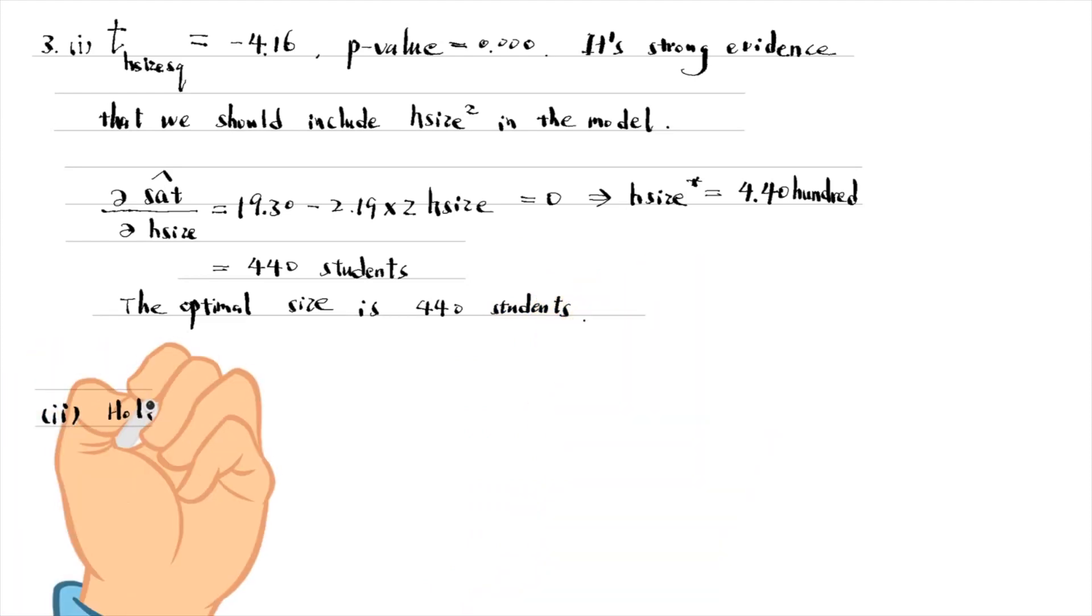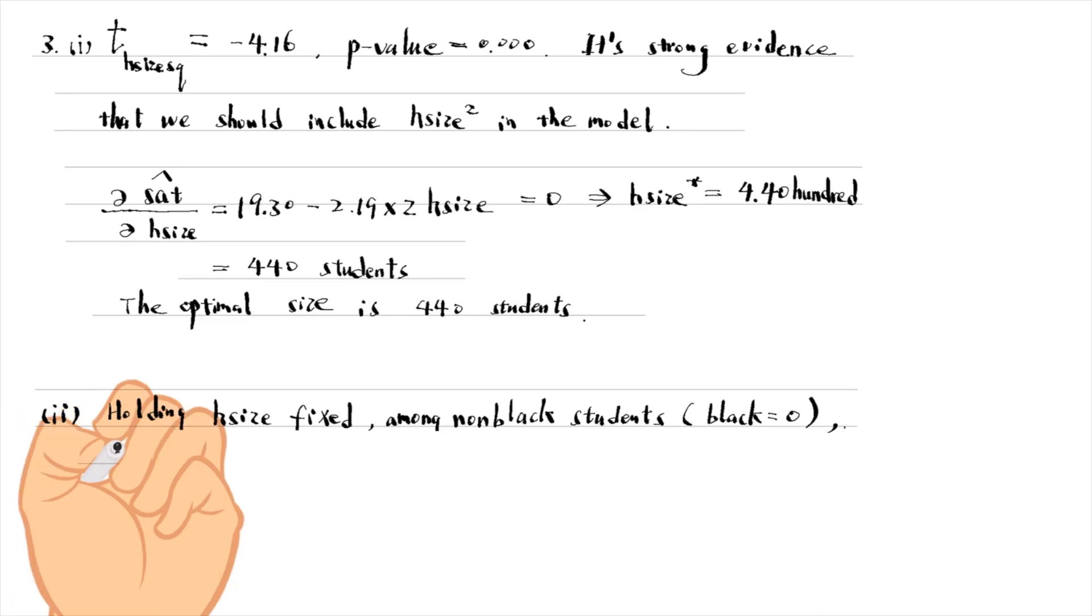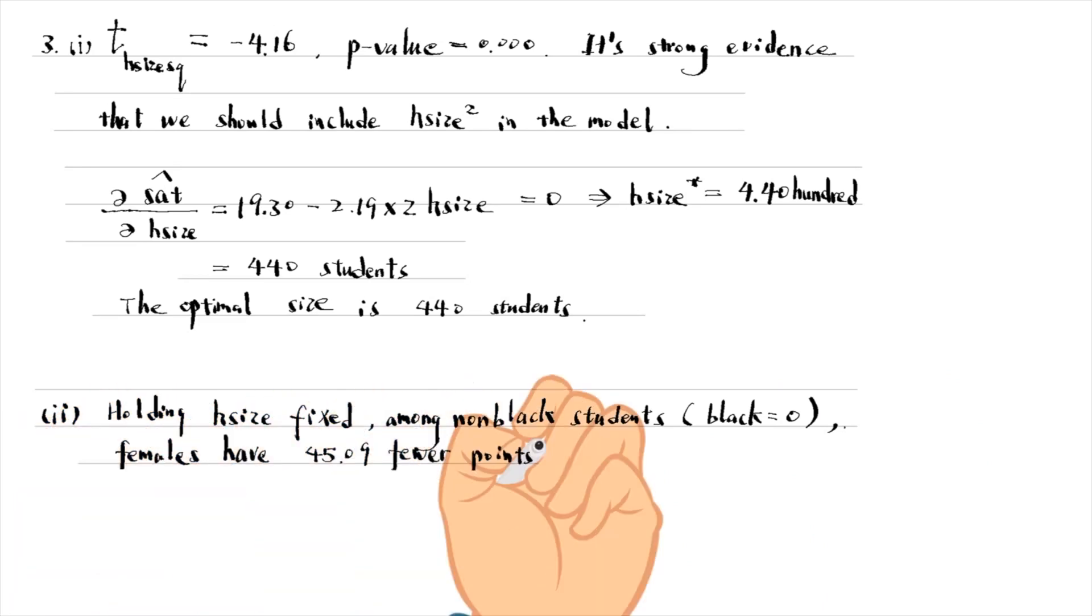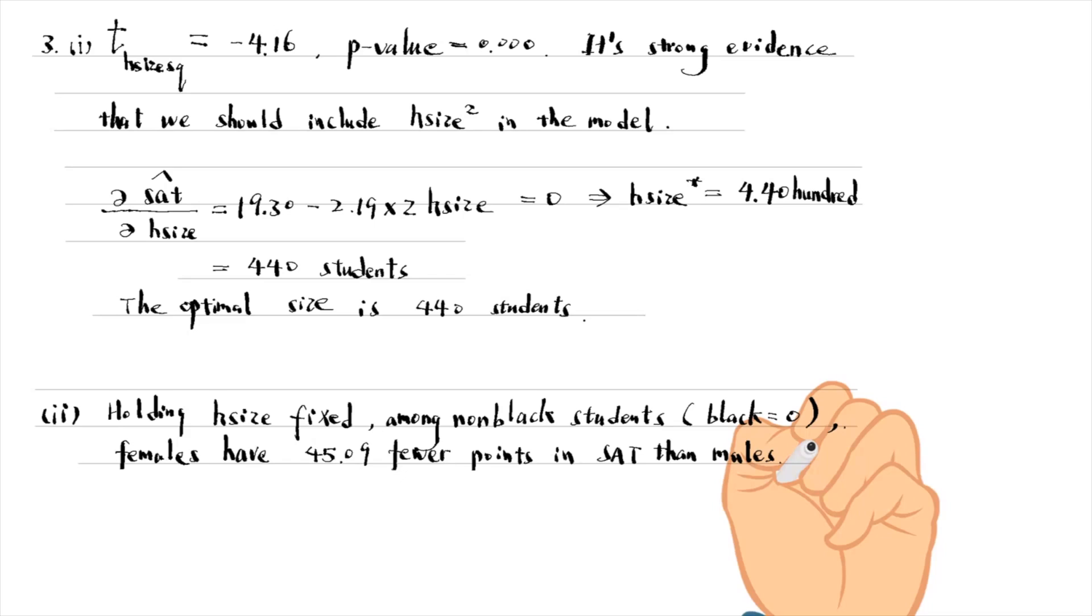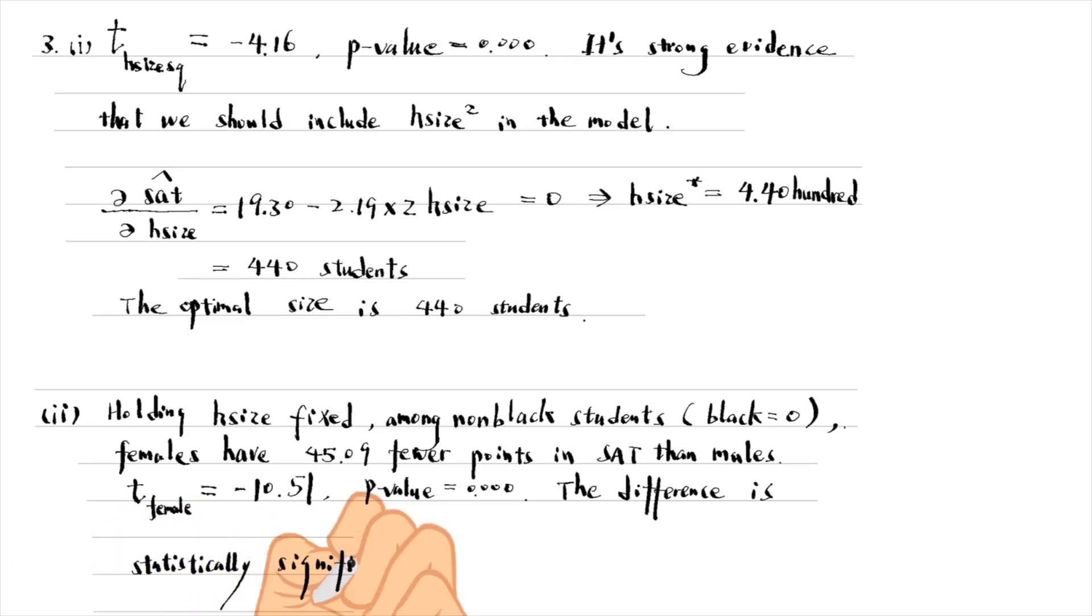For part two, holding school size fixed, among non-black students, females have 45.09 fewer points in SAT than males. The t-statistic for the variable female is minus 10.51, and its p-value is zero to three decimal places. The difference is statistically significant at any conventional level.